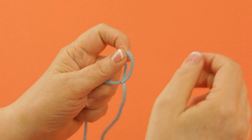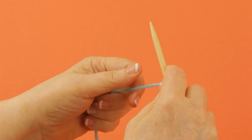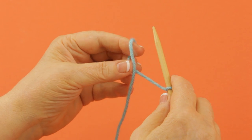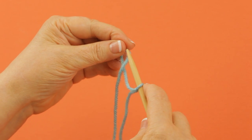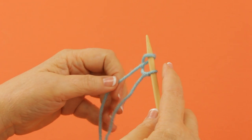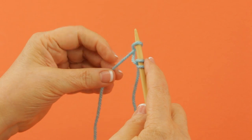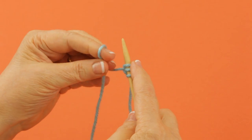I'm going to put my needle in here and this e-wrap is called this because it looks like a lowercase e when you loop your yarn around. You just turn the yarn and put it on your knitting needle.